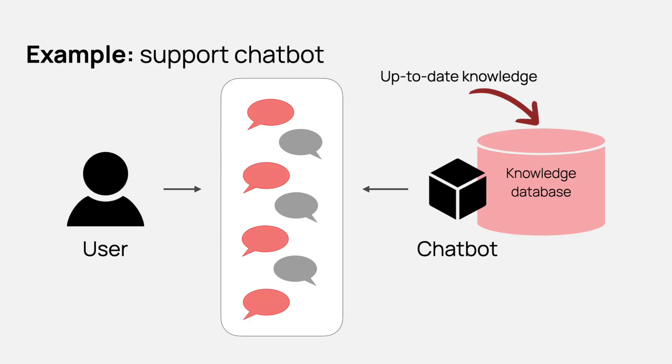The core idea behind RAG is to give an LLM access to knowledge beyond what it learned during training. For example, if you are creating a customer support chatbot, you will give it access to your help articles so that the system can use them to formulate the response. RAG consists of two parts: the R stands for retrieval — that's where we search for the answer — and the G stands for generation, where the LLM processes the information it found to formulate the final response.